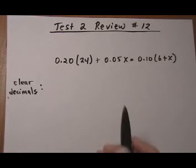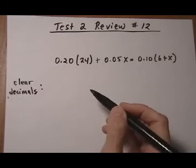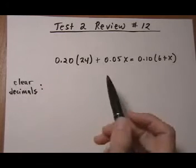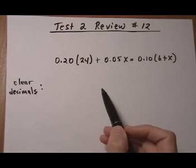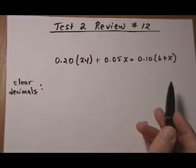Here we have an equation with decimals. So the general approach we're going to use for this is first we're going to clear the decimals by multiplying by the right power of 10 that we need.